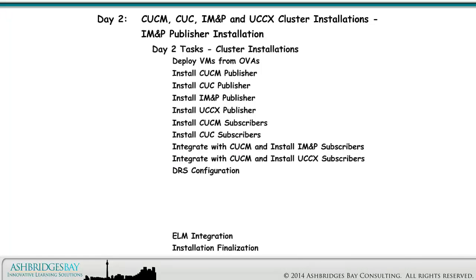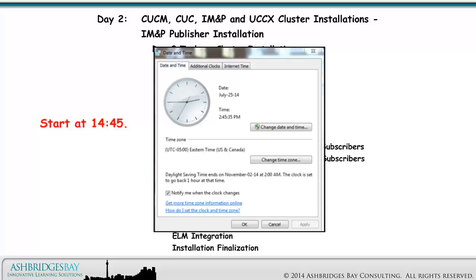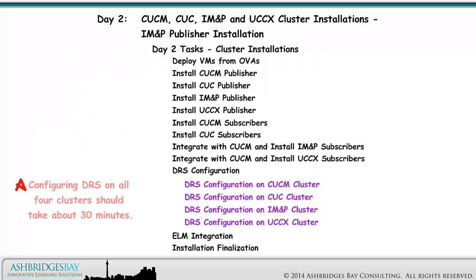Everything is installed or installing. The IM&P and UCCX subscriber installations are probably ongoing. We are going to proceed to configure DRS for all four clusters while these installations are completing — start at 14:45. Configuring DRS on all four clusters should take about 30 minutes.